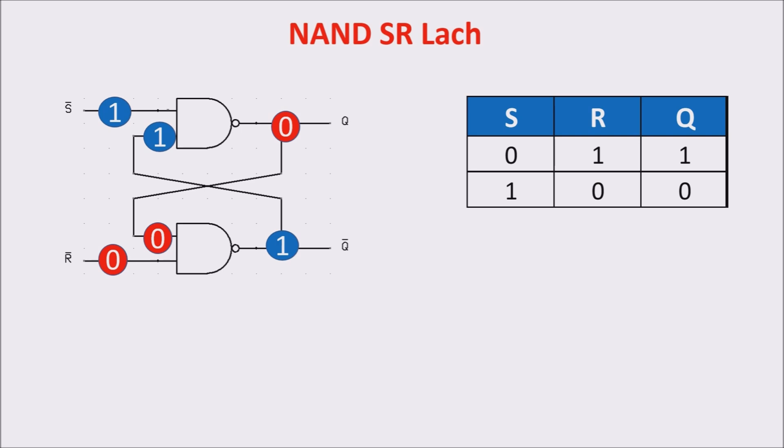If we now come back with both the inputs to one, we can have one or zero on the output depending on the previous situation. In this case, our last pulse was the RESET, so we have a zero on the output. This is how latch remembers a bit. Acting on SET and RESET, we put a one or a zero to output Q and we can store it by keeping SET and RESET to one.